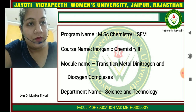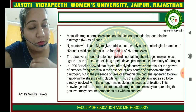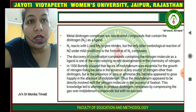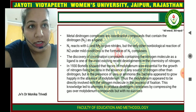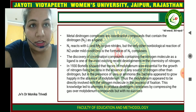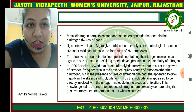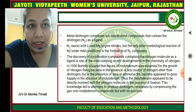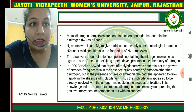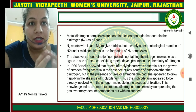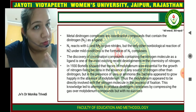In previous sessions we have learned about metal-carbonyl compounds. Now we have to learn about dinitrogen complexes. The metal-dinitrogen complexes are coordination compounds that contain dinitrogen, which is N2, as a ligand. N2 reacts with metals like lithium and magnesium to give a nitride, but the only other known biological reaction of N2 under mild conditions is formation of N2 complexes.